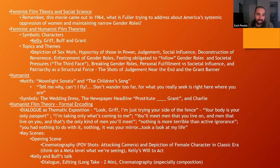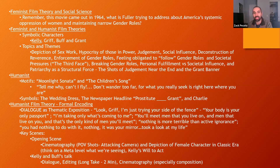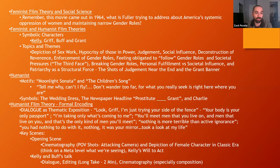On a humanist and semiotic level, we have two motifs — both are songs. One is the Moonlight Sonata — you'll hear it a few times. Some characters actually talk about what the Moonlight Sonata means to them, so listen to those lines of dialogue. Then consider how its impact changes the last time you hear it. There's another song in the film — we'll call it 'the children's song' — which plays in a few pivotal scenes, both times diegetically. Pay attention to a couple of the lyrics: 'Tell me why can't I fly' and 'Don't wander too far, for what you really seek is right here where you are.'